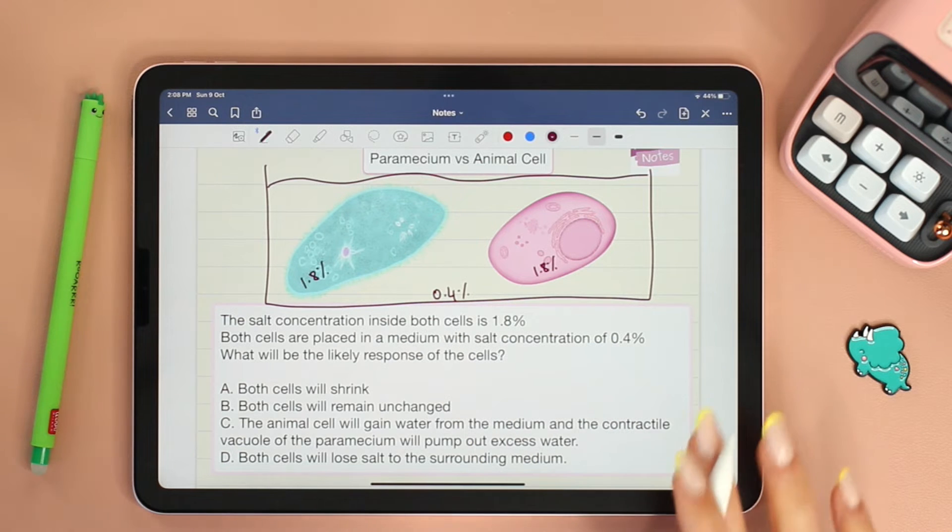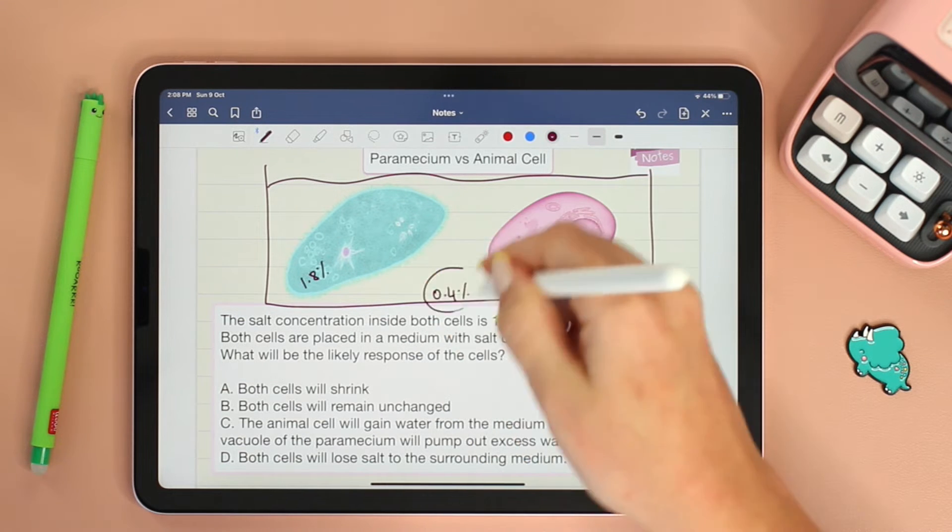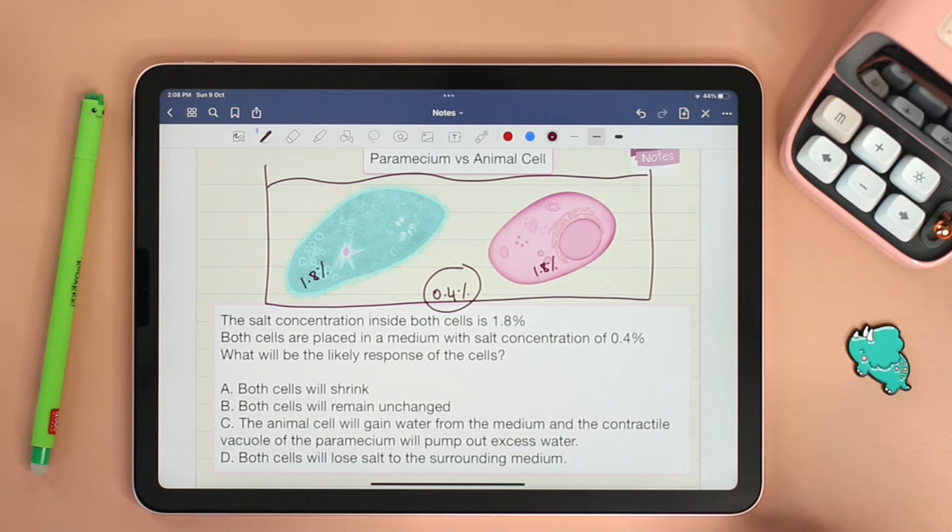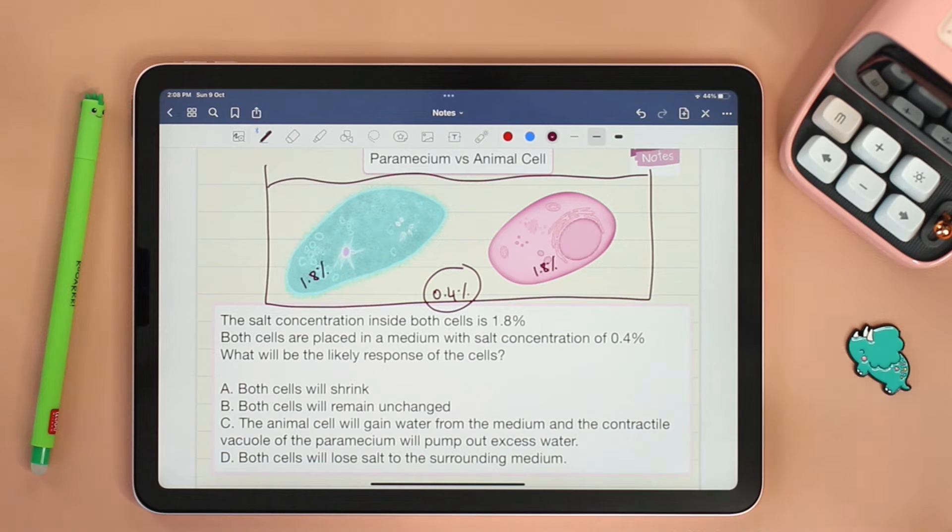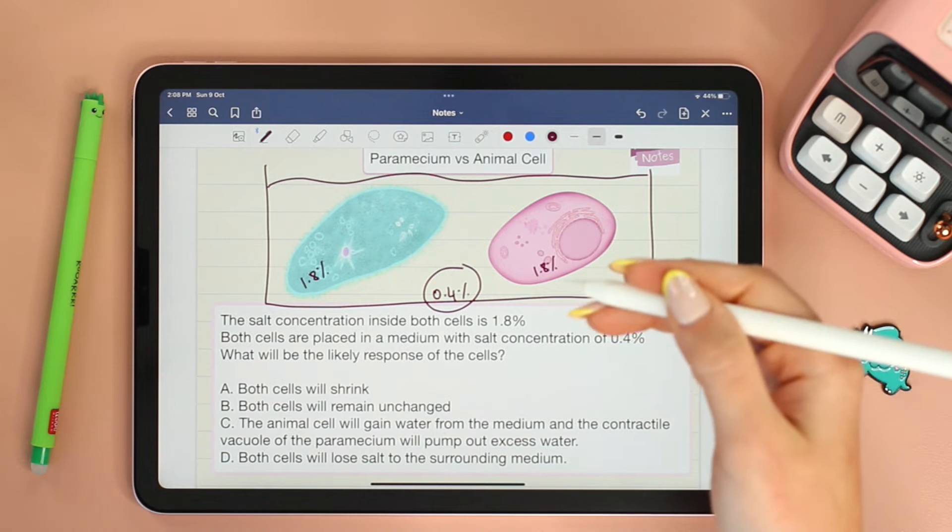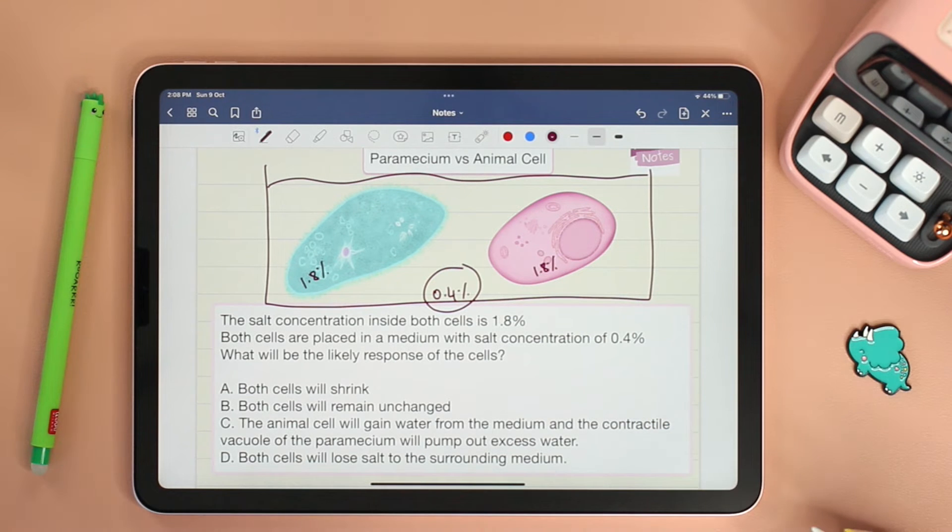The first thing we need to figure out is what type of solution is this 0.4% with respect to the cells? Is it hypotonic, hypertonic, or isotonic?